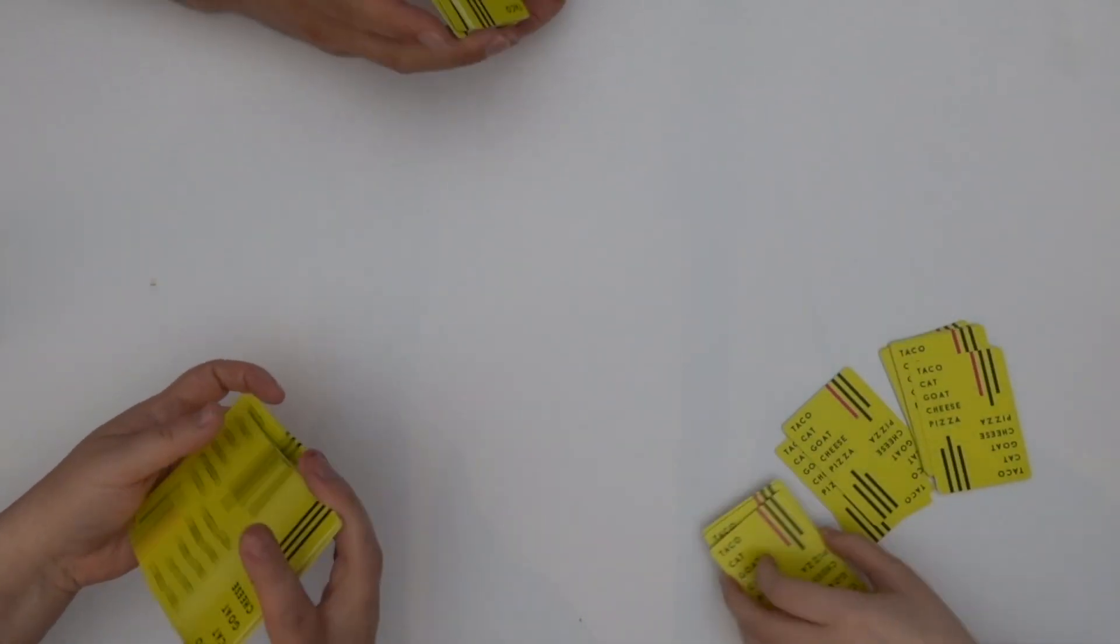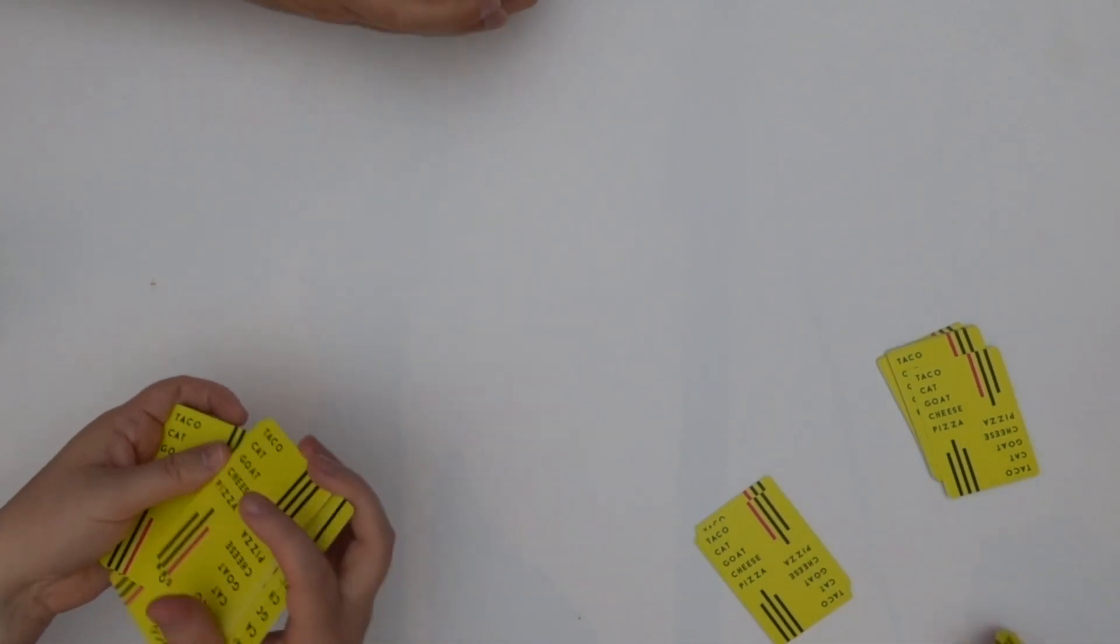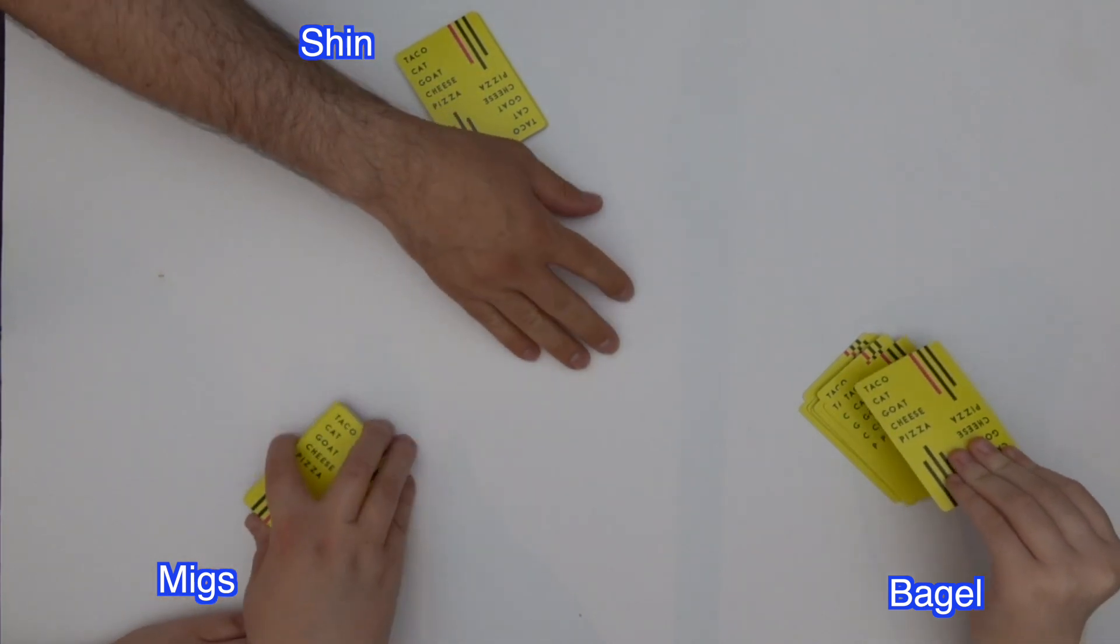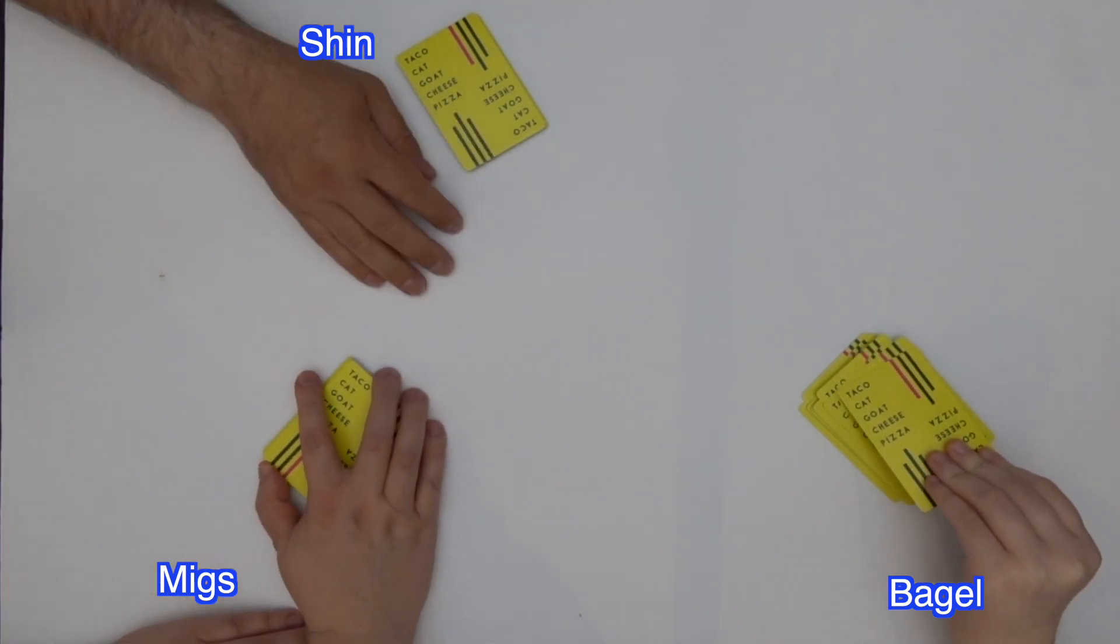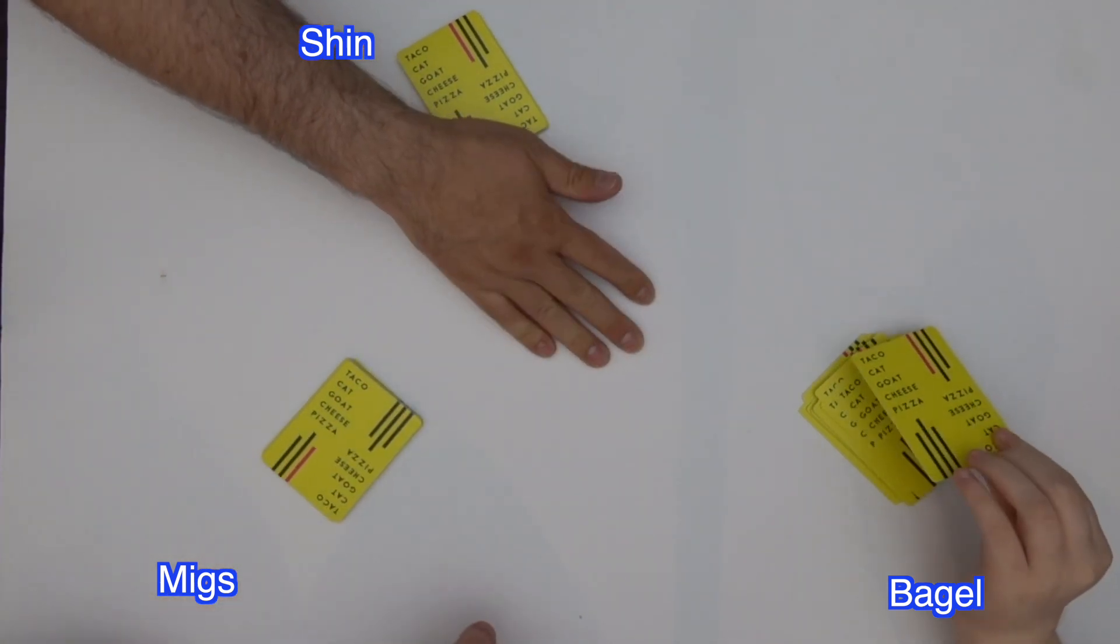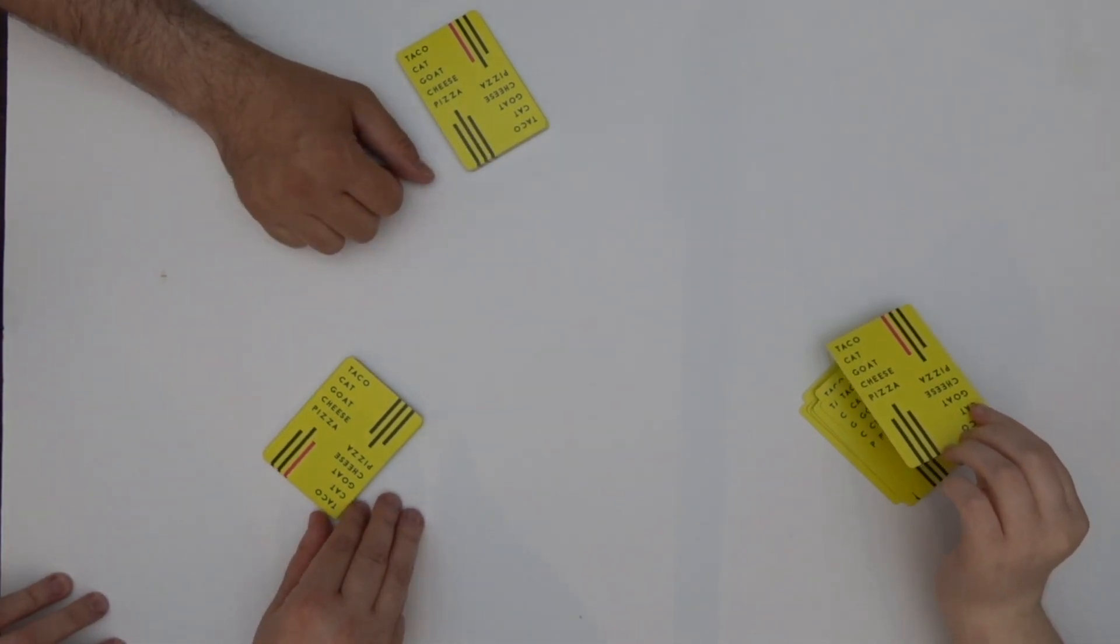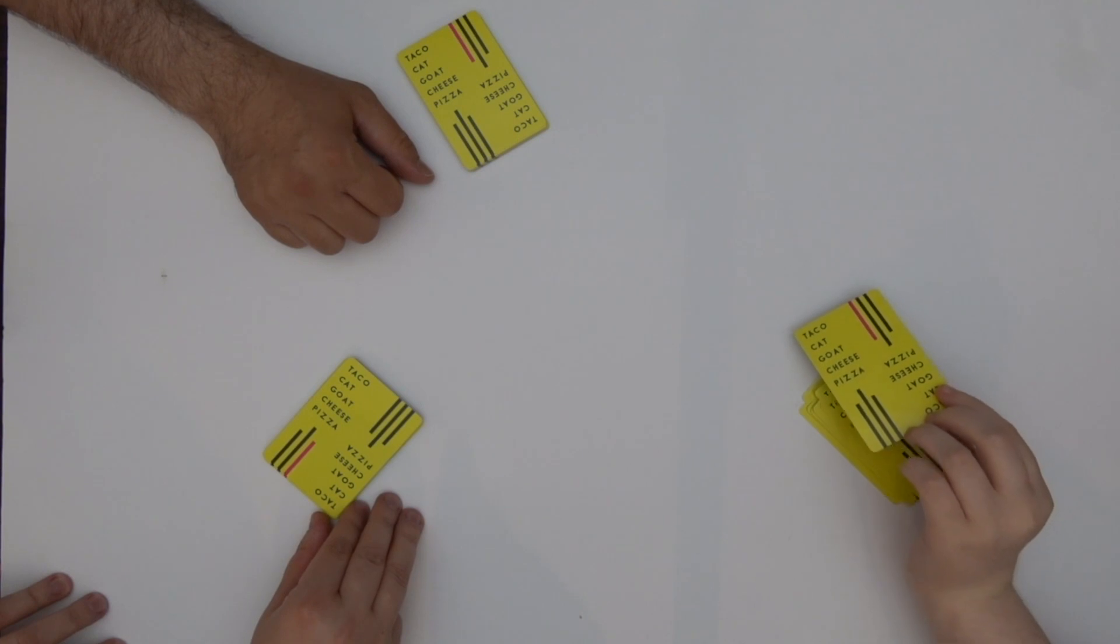It says person left of the dealer starts, so Bagel will go first. The moment the word you say matches what comes out, everyone needs to put their hand in. Last person to get their hand in takes all the cards. The idea is that the first person who completely runs out of cards is the winner.